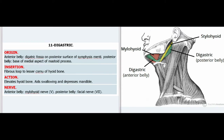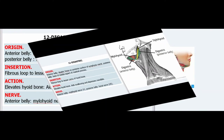11. Digastric. Origin — Anterior belly: digastric fossa on posterior surface of symphysis menti; Posterior belly: base of medial aspect of mastoid process. Insertion: Fibrous loop to lesser cornu of hyoid bone. Action: Elevates hyoid bone, aids swallowing and depresses mandible. Nerve — Anterior belly: mylohyoid nerve (V); Posterior belly: facial nerve (VII).